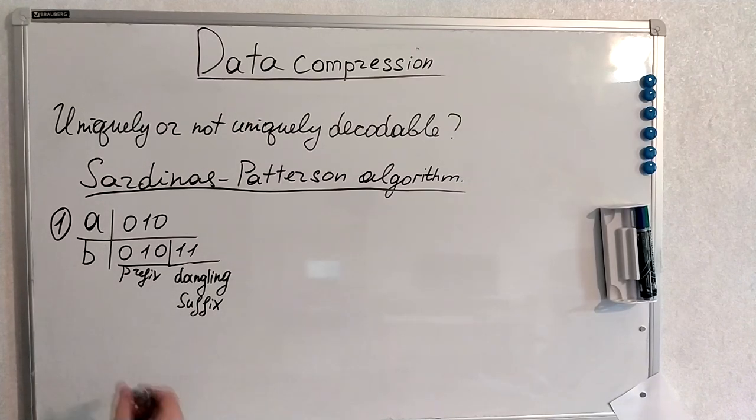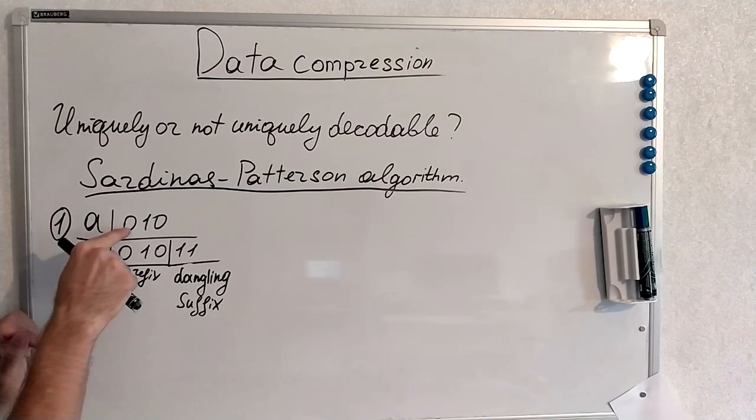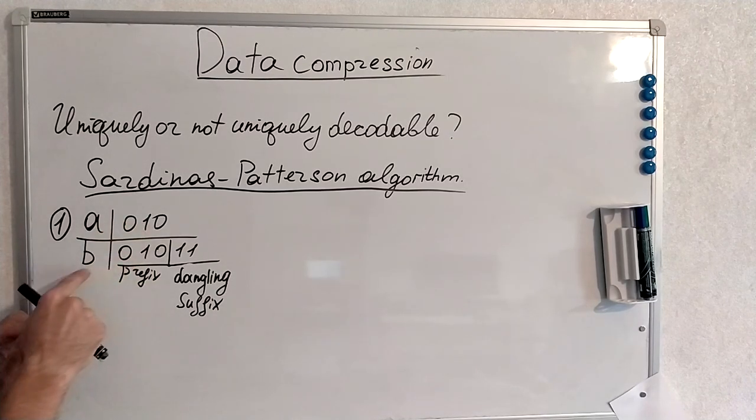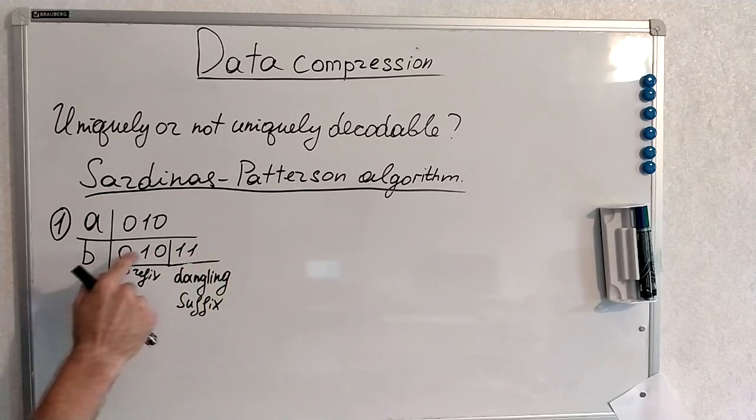Now let's quickly recap what's prefix and what's dangling suffix. Here you can see that A consists of 0, 1, 0 and B is represented by 0, 1, 0, 1, 1.